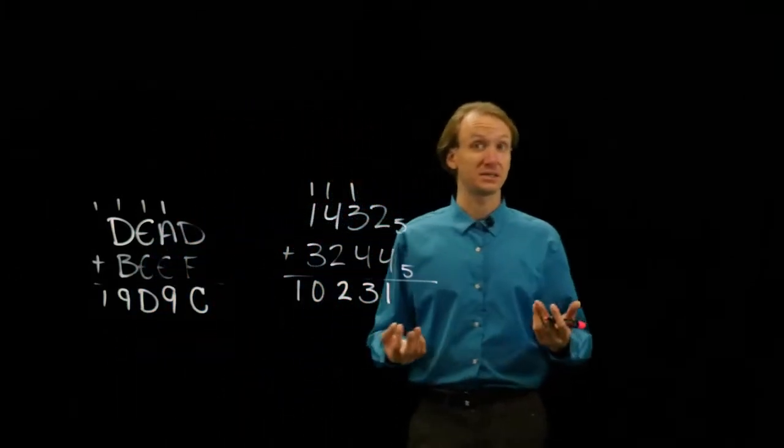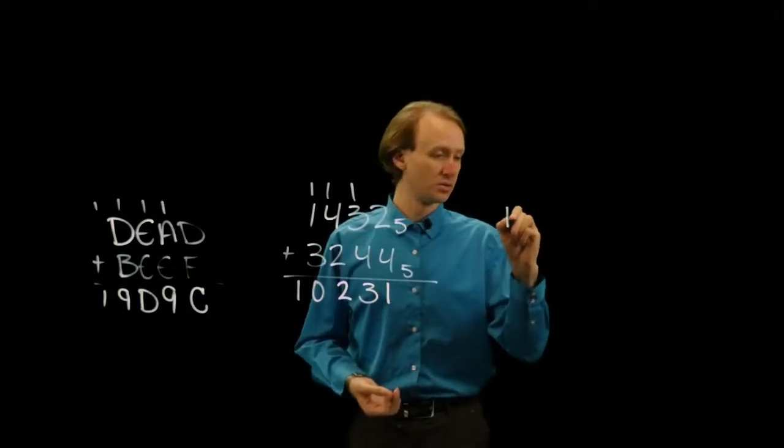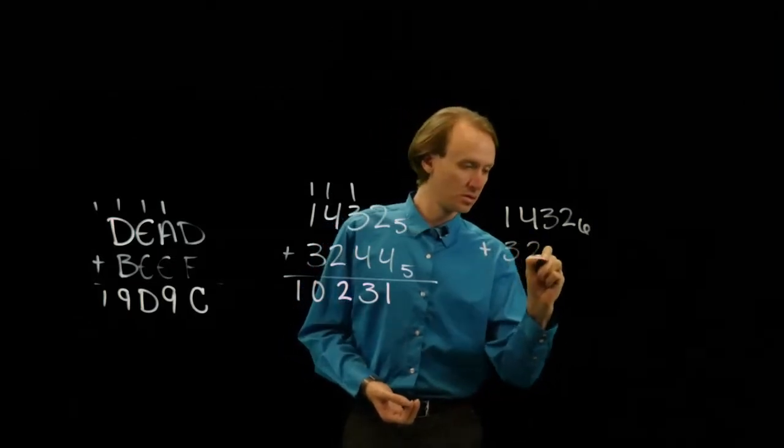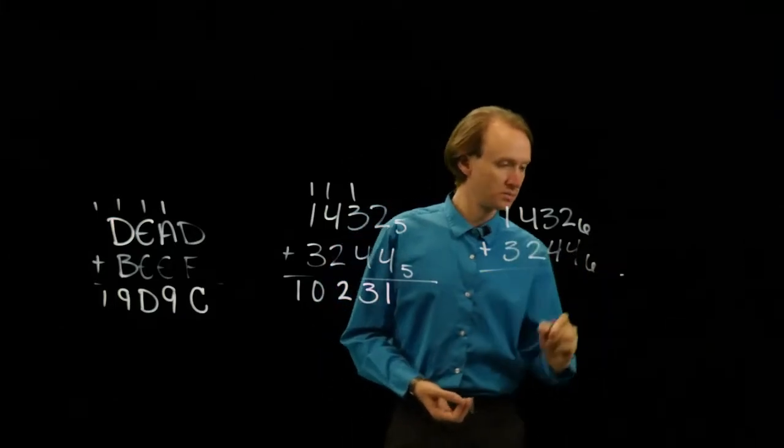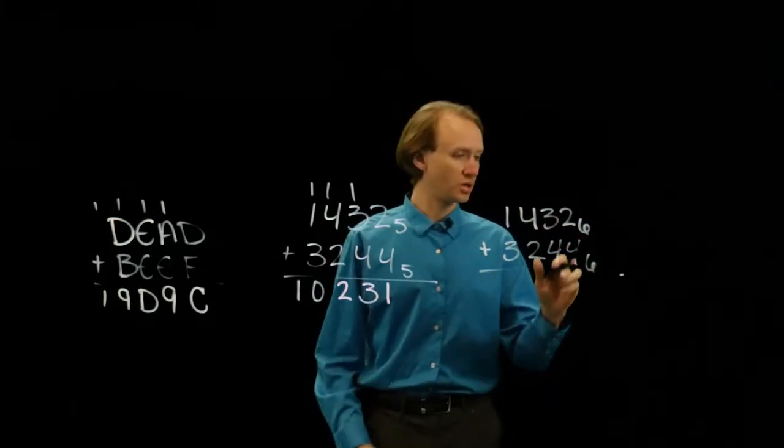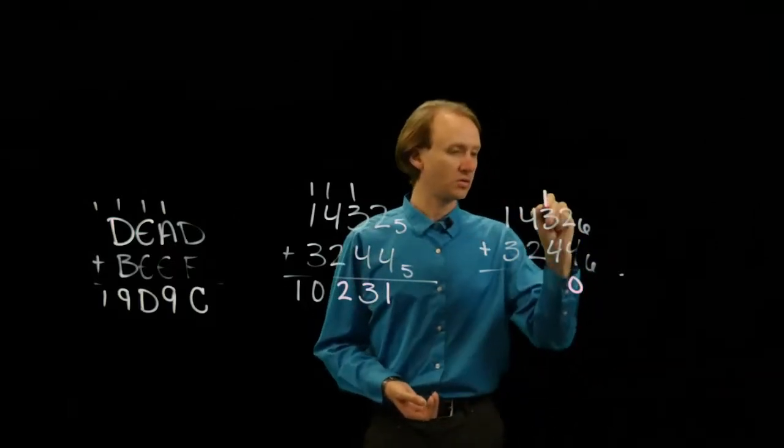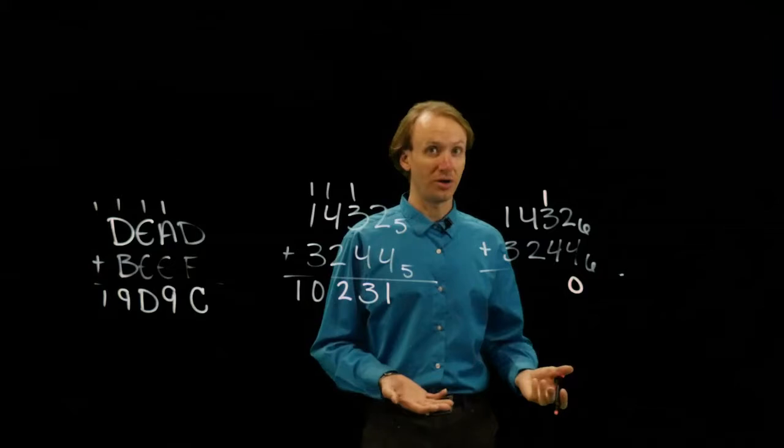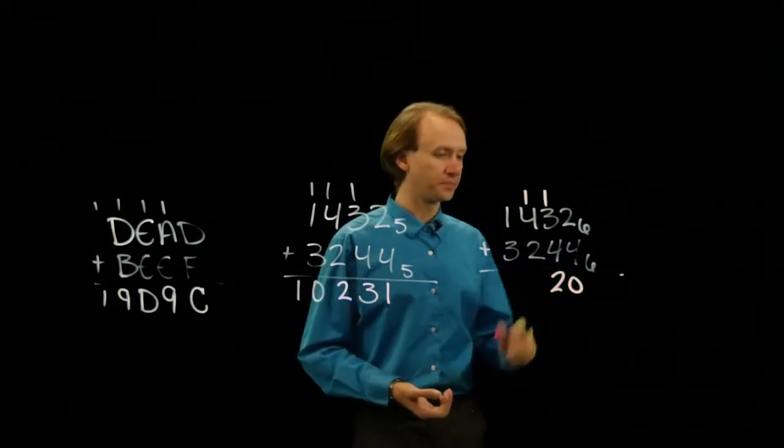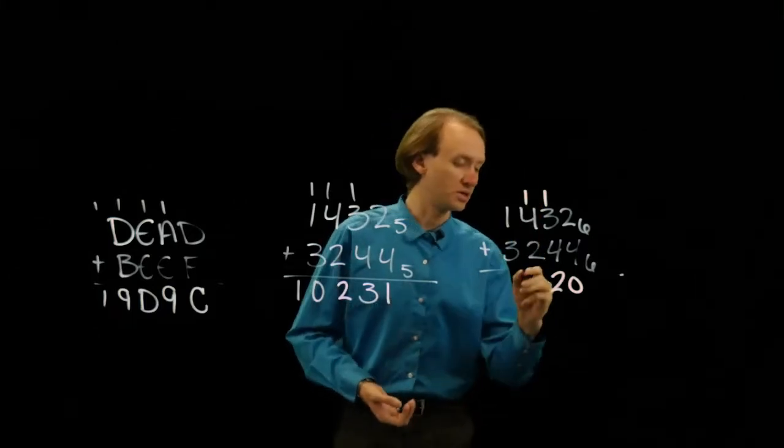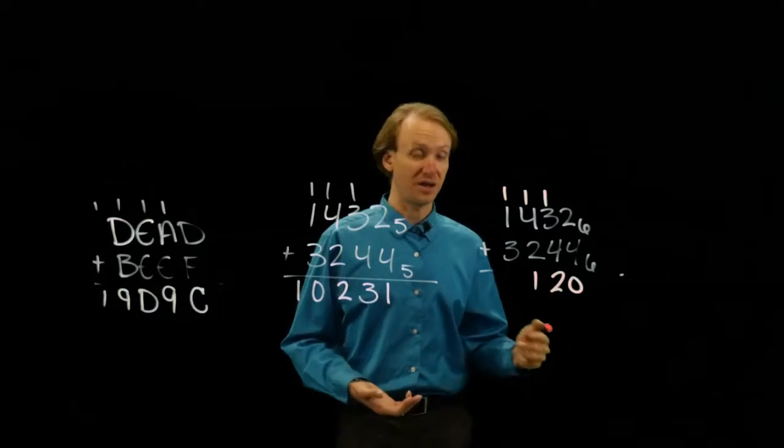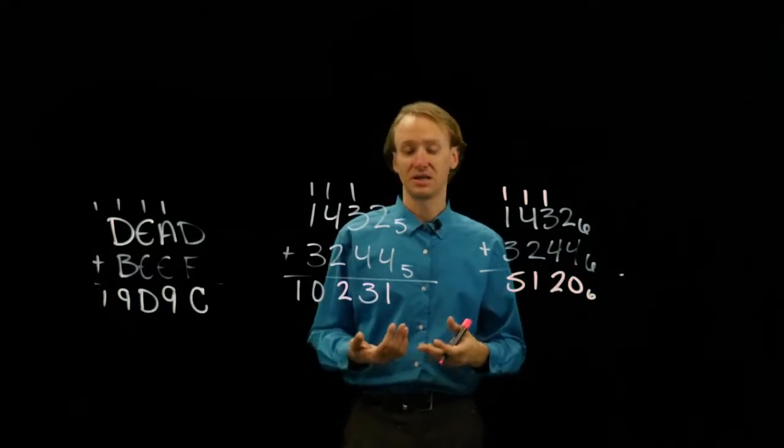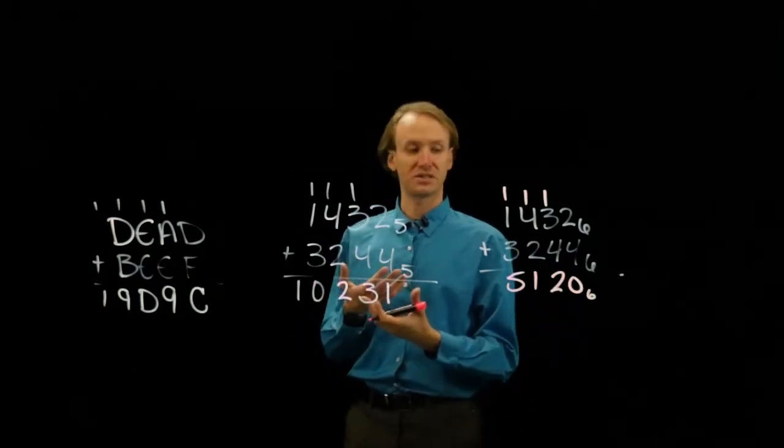But I can do that same problem in, say, base 6. And I'll get a slightly different number. So 2 plus 4 is 10 in base 6. So I'll write down a 0, carry a 1. 1 plus 3 is 4. 4 plus 4 is 12. So I'll write down a 2, carry a 1. 4 plus 2 is 10, plus 1 is 11. And then 1 plus 1 plus 3 is 5. So I get a number that's about half the size in base 6 as it is if I do that same arithmetic in base 5.